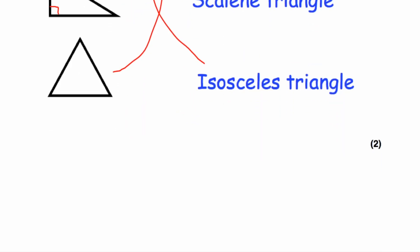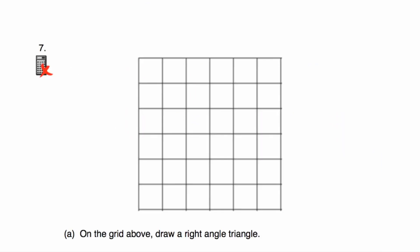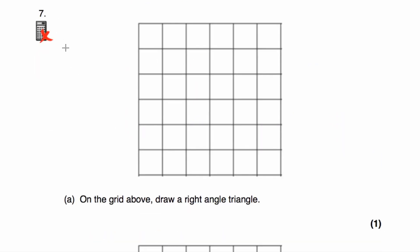Let's have a look at question number seven. Question seven says: on the grid, draw a right-angle triangle. We want to draw a triangle with a 90-degree angle. So we do a vertical line going down, then a horizontal line — that gives a right angle — and then join it up. That angle in the bottom left-hand corner would be a right angle. Let's mark it in — that's a right-angle triangle.